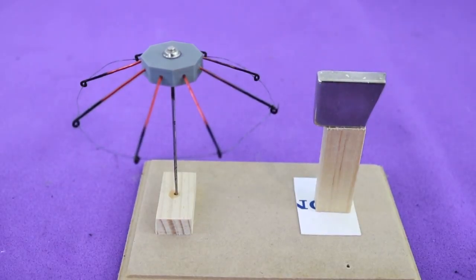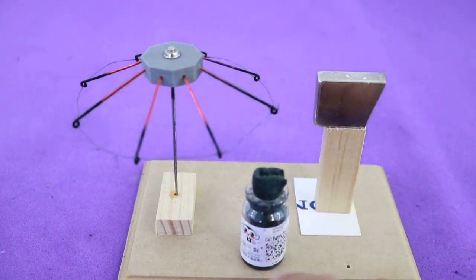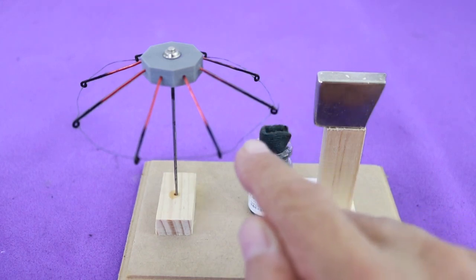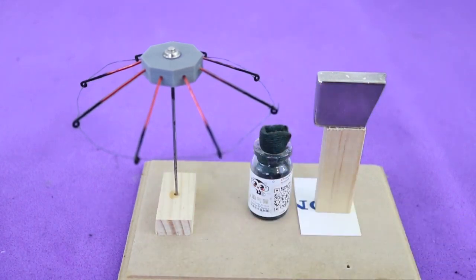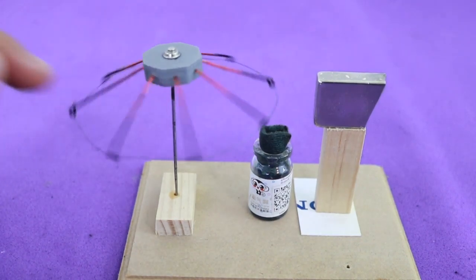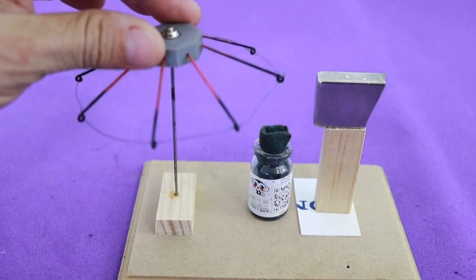As you can see, the engine starts to move when we put a heat source below this little wire here around the rotor. The rotor can move freely. It just rests on the tip of a needle.